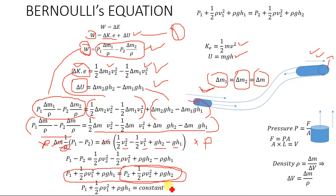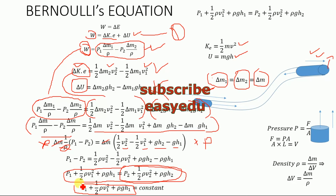This can be written as P plus one-half·ρv² plus ρgh equals constant. This equation represents the conservation of energy for an incompressible, non-viscous fluid: the total mechanical energy of the fluid remains constant. Thank you for watching, and don't forget to subscribe for more videos.